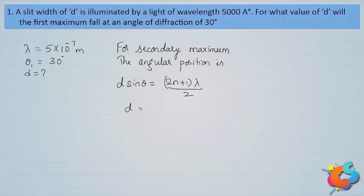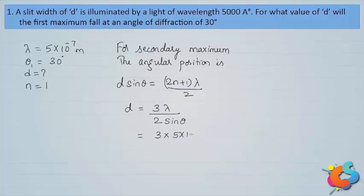To find the slit width from the formula, we make some adjustments. Since it is the first secondary maximum, we write n=1. So the formula becomes d sin θ = 3λ/2. Taking sin θ to the right-hand side, and substituting θ=30°: d = 3λ / (2 sin 30°) = 3 × 5×10⁻⁷ / (2 × sin 30°).